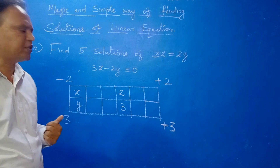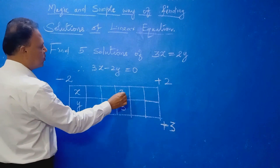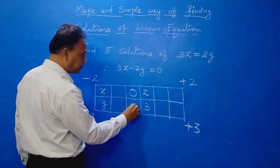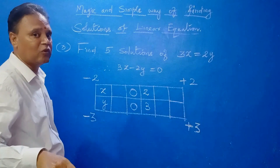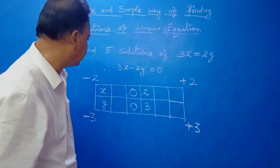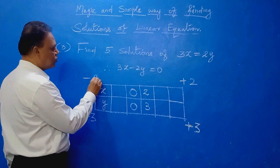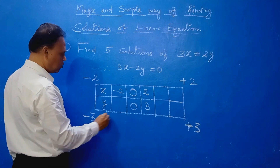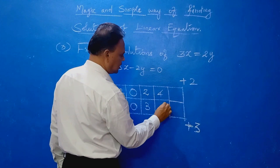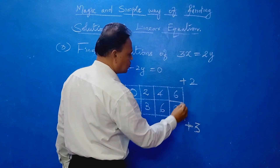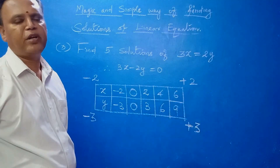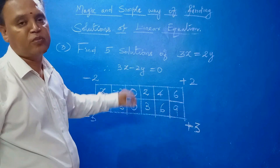Now you can find out many solutions. Just adding: minus 2 plus 2 is 0, minus 3 plus 3 is 0. Correctly, one solution is 0 comma 0. So 0 comma 0 as a solution means the line will pass through the origin. Then 0 minus 2 is minus 2, 0 minus 3 is minus 3. Add: 2 plus 2 is 4, 3 plus 3 is 6. Then 6, then 9. Like this you can find out many solutions. In the problem only 5 solutions are needed — we got it within a minute. That is the beauty of this method. Learn it properly, remember, and do practice.